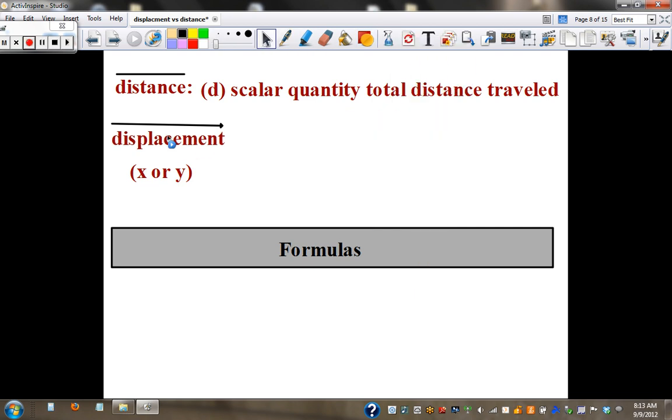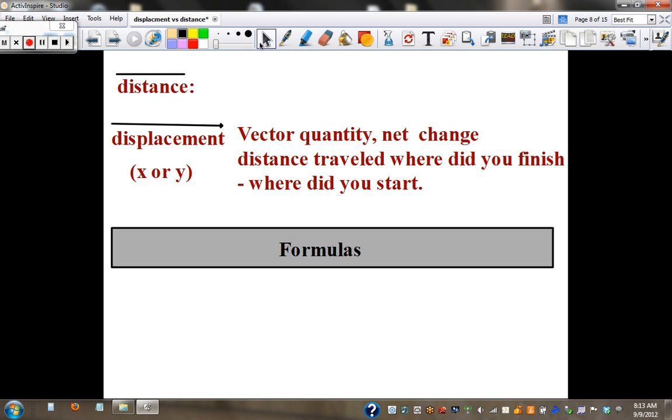Displacement, on the other hand, is a vector quantity. It's the net change in distance traveled from where you start to where you finish. In the path I drew before, here's the starting position, here's the final position,